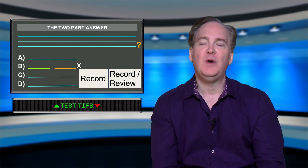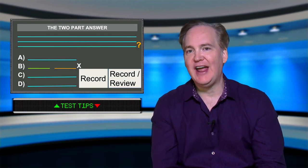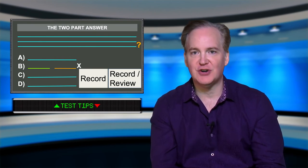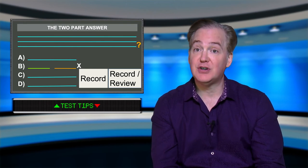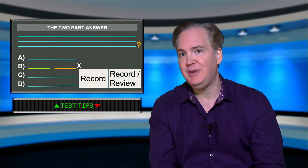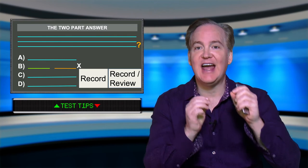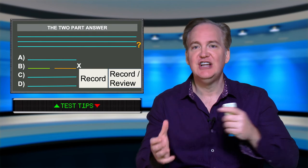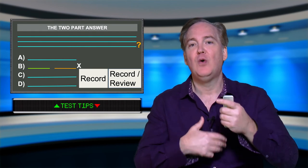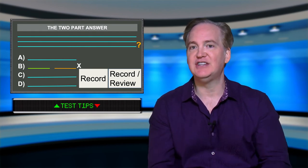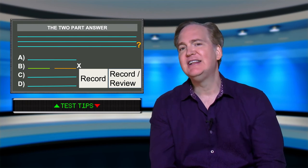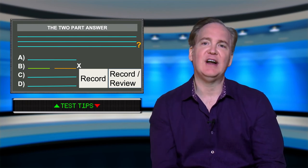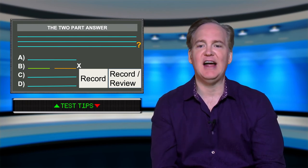However, we want you to stay away from absolute terms. Absolute terms tend to be wrong. Always and never. Always and never are absolute terms. There traditionally is something that would allow or not allow something to take place. So always and never tend to be incorrect answers on the exam as well.